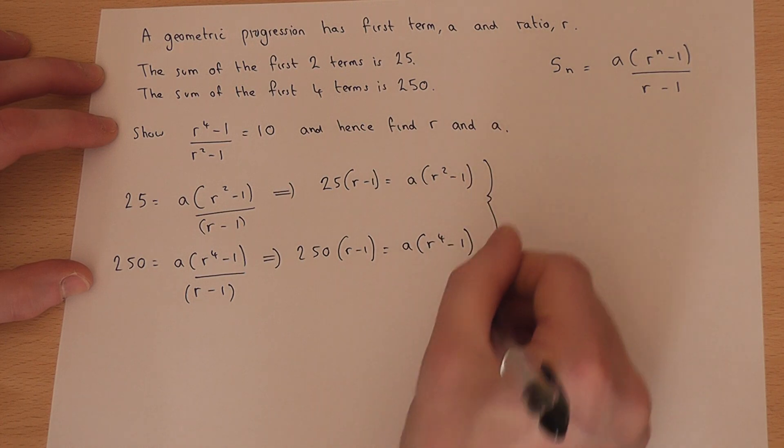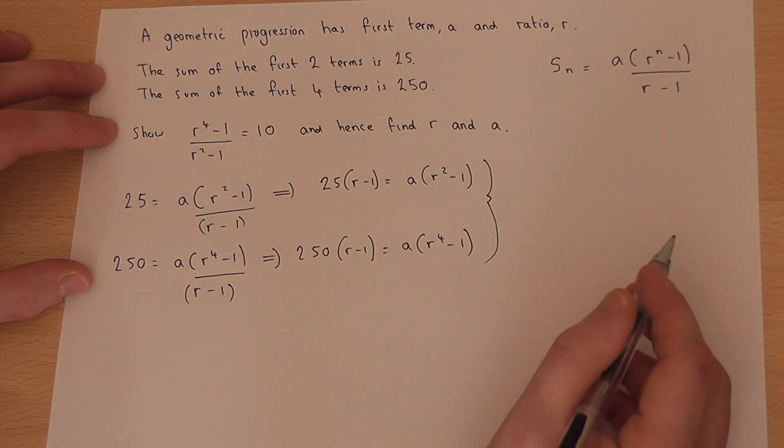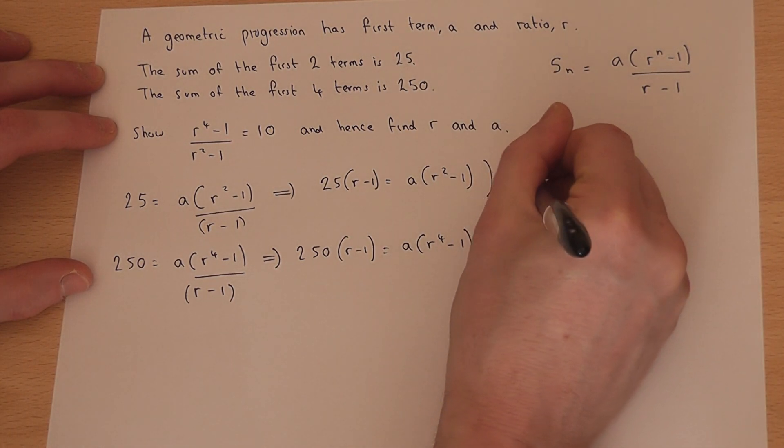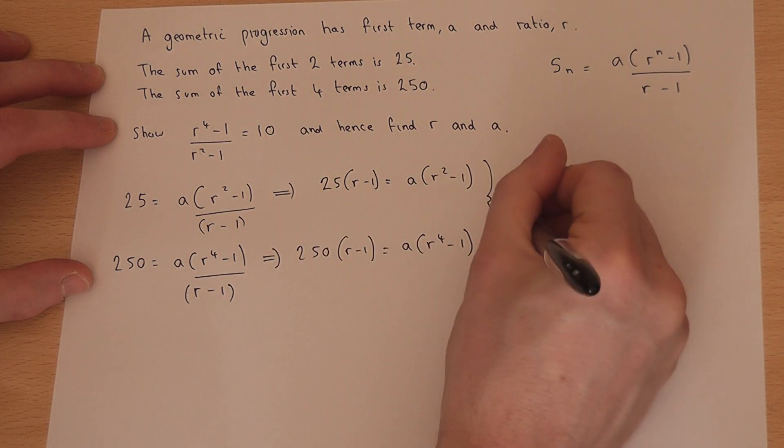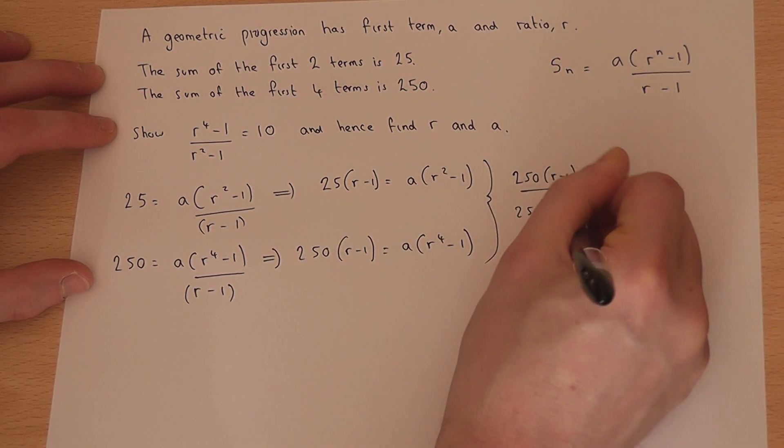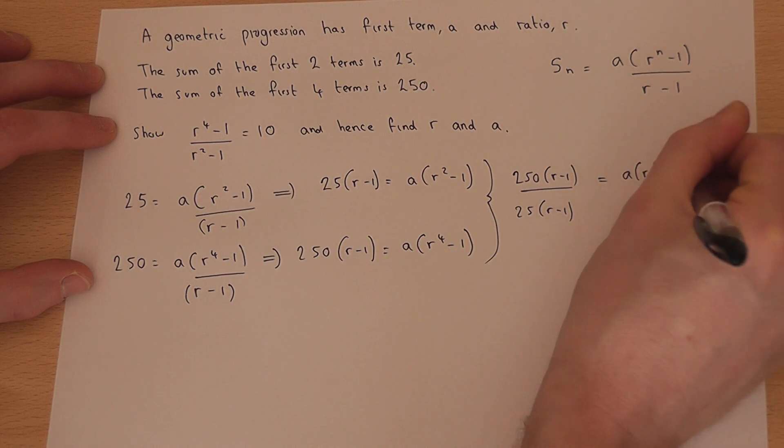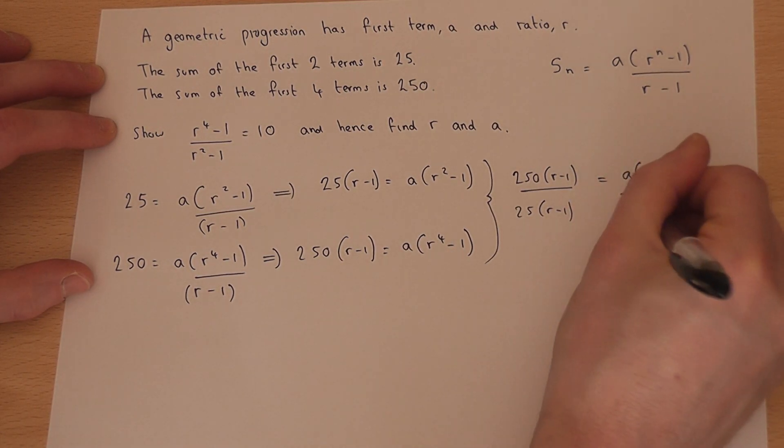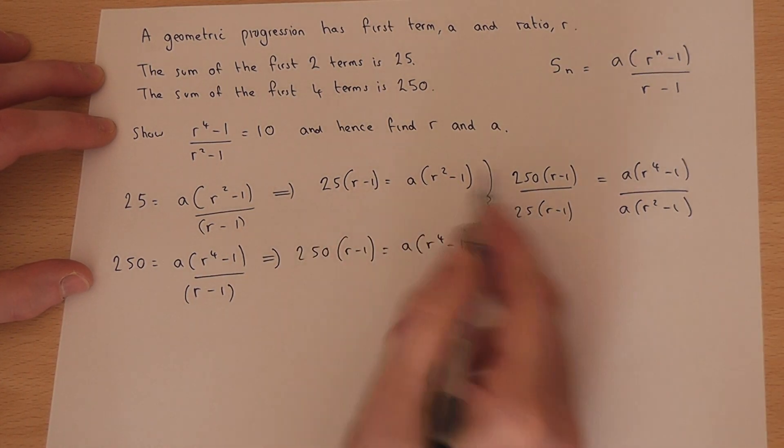This is now the clever bit. If I divide that equation by that equation, then look what happens. So 250(r - 1)/[25(r - 1)] equals a(r⁴ - 1)/[a(r² - 1)]. So it's that equation over that equation.